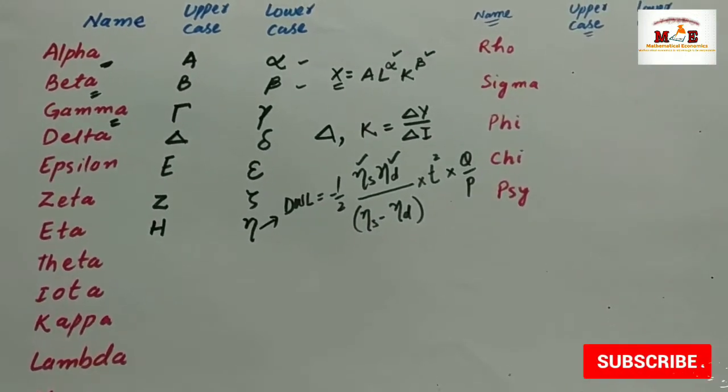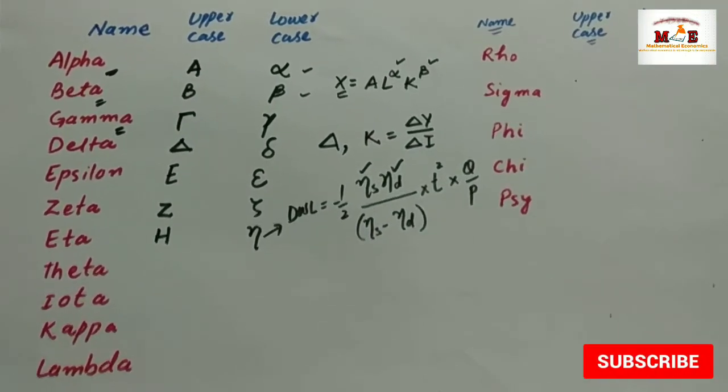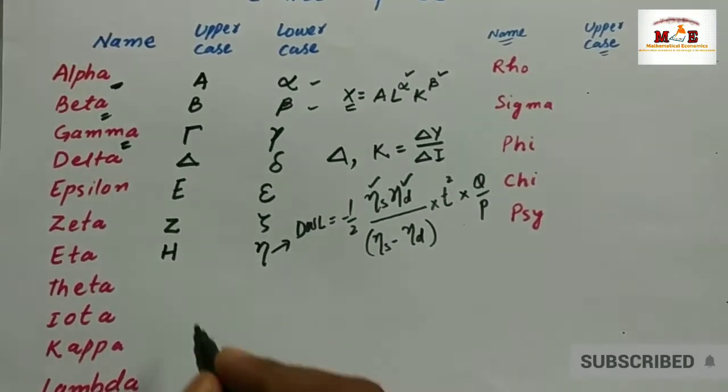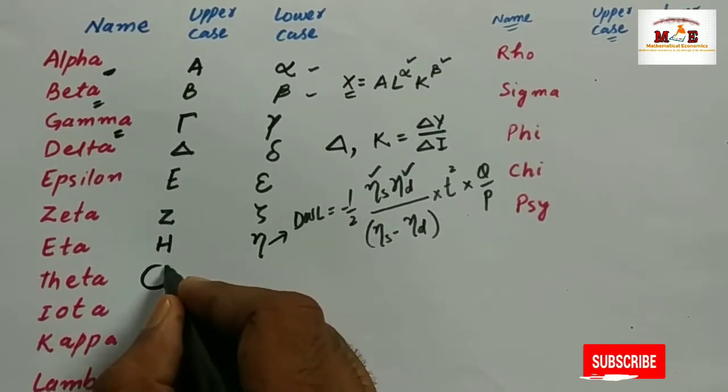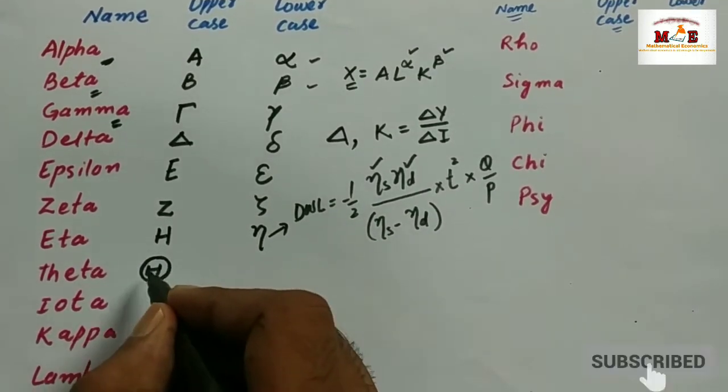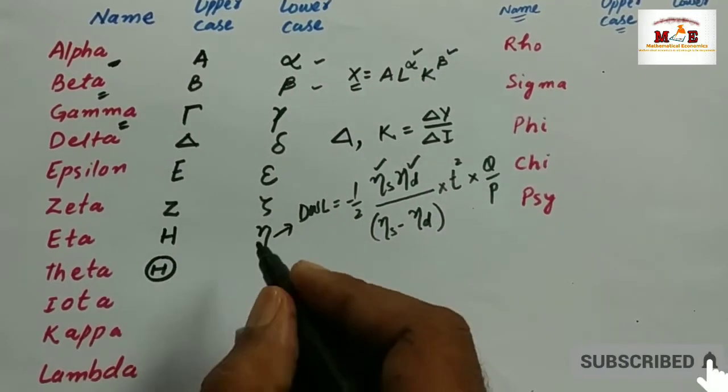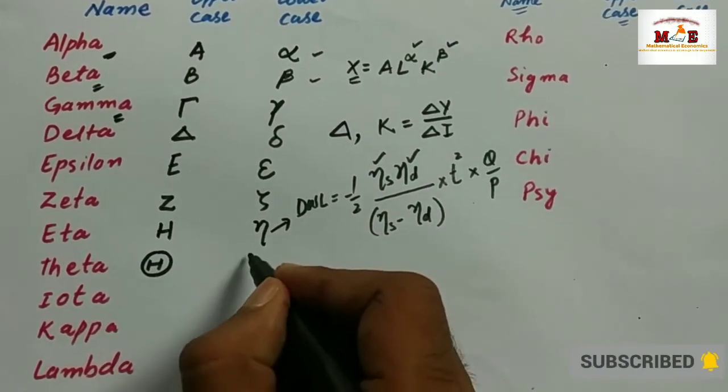The next one is theta. Its uppercase is written like this, and its lowercase is like this.